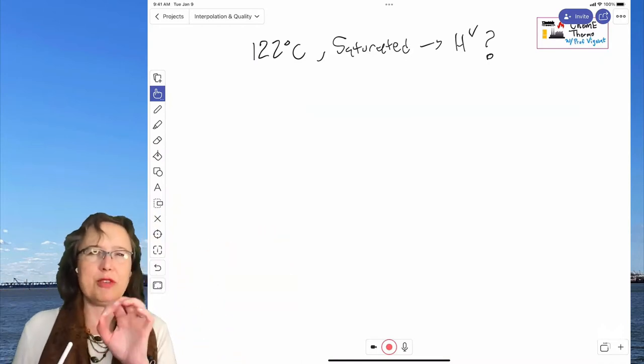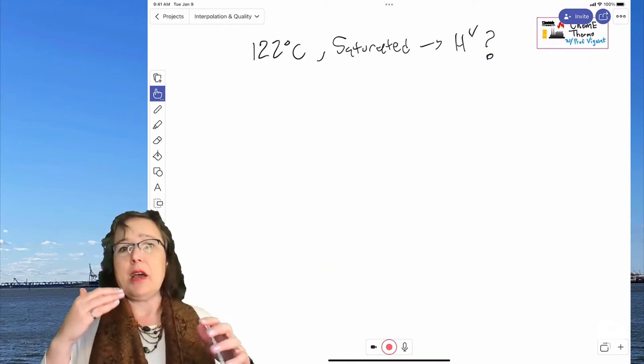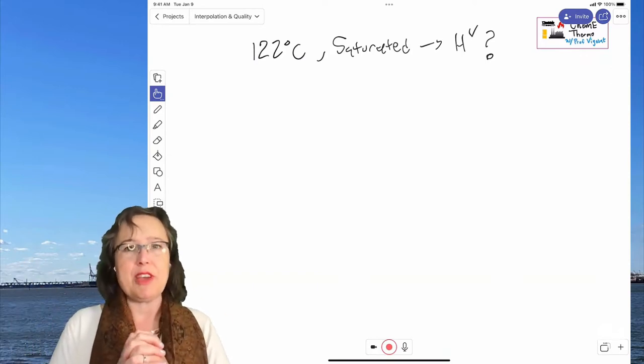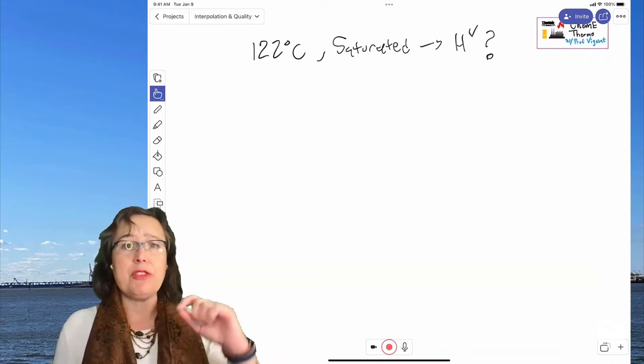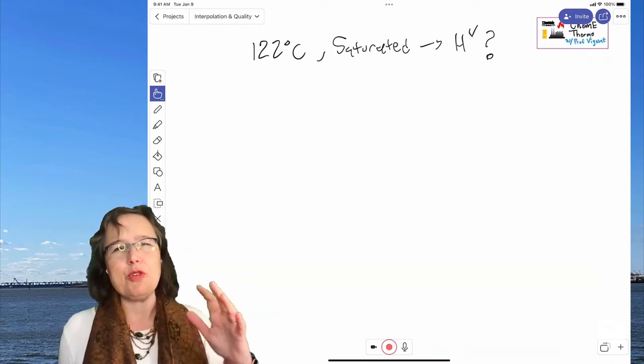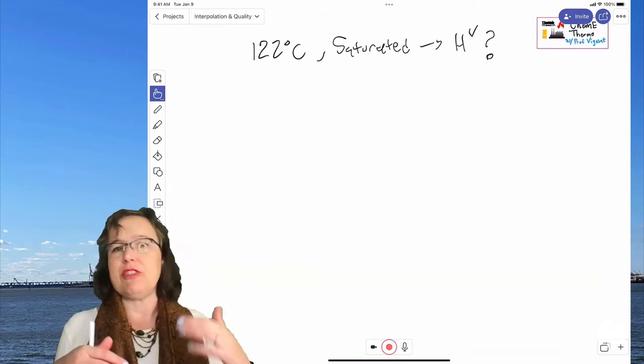But also, I want you to be able to use a paper steam table, and the reason for this is that the paper steam table is always available. Sometimes some of these other functions are locked behind paywalls, and the paper steam table gives us the ability to look things up by other variables than just temperature and pressure.